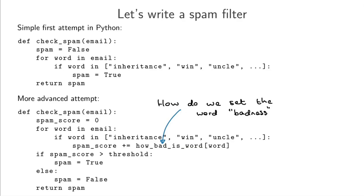The machine learning way of doing this is basically to define a model which might actually look like this advanced filter example here, this function, and then instead of setting this bad wordness scores by hand we get many examples of previous emails which have been labeled as spam or not and the scores for each of the words in this how bad is word dictionary is then learned from these previous examples from these previous emails.